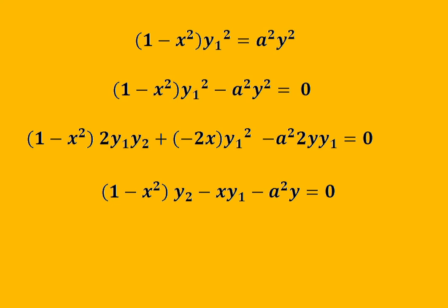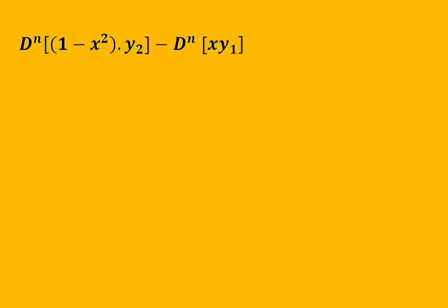To find the required relation, we differentiate this equation n times using Leibniz's theorem. Differentiating n times, this becomes the nth derivative of (1 - x²)·y2, minus the nth derivative of x·y1, minus a² times the nth derivative of y, all equal to 0.